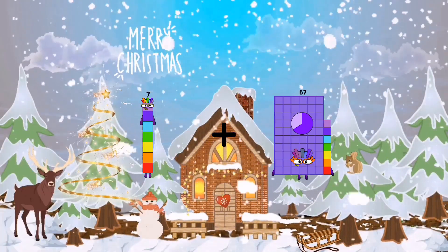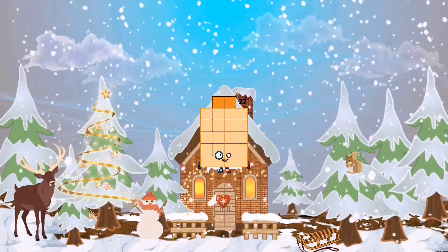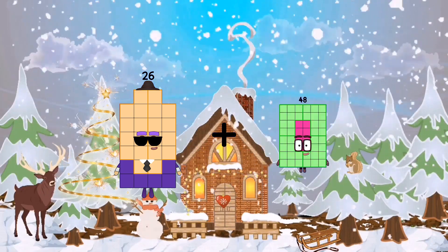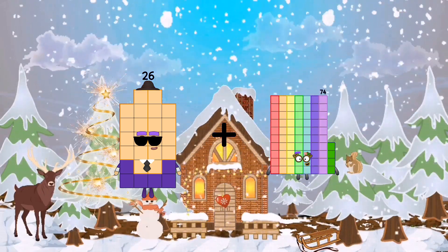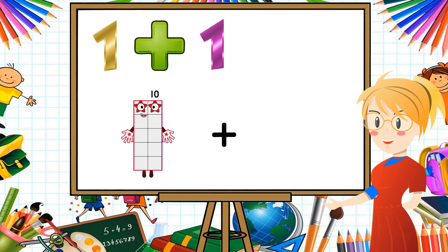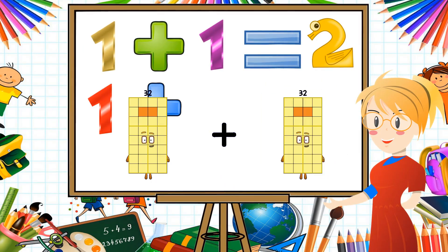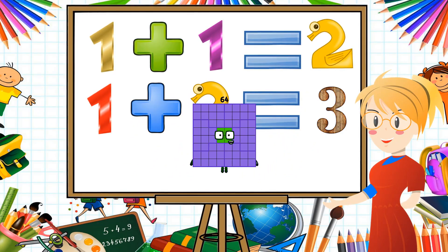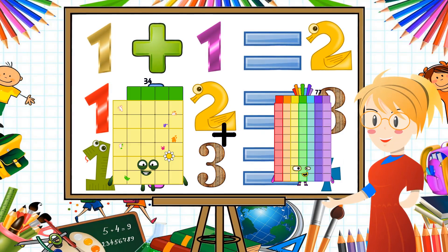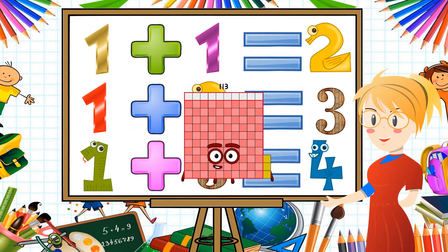7 plus 15 equals 22. 26 plus 74 equals 100. 32 plus 32 equals 64. 34 plus 79 equals 113. 52 plus 36 equals 88. 46 plus 71 equals 155.